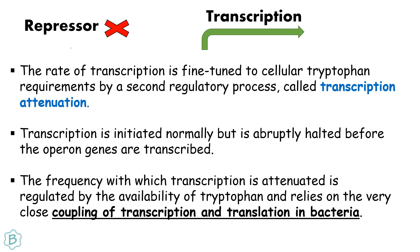When the repressor is not present, transcription of the tryptophan operon will happen. The rate of transcription is fine-tuned to cellular tryptophan requirements by a second method called transcription attenuation. Transcription is initiated normally in this case but abruptly halted before the operon genes are transcribed. The frequency with which transcription is attenuated is regulated by the level of tryptophan and relies on the very close coupling of transcription and translation in bacteria.